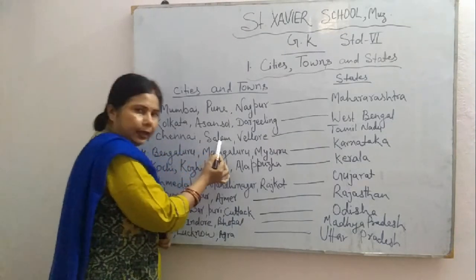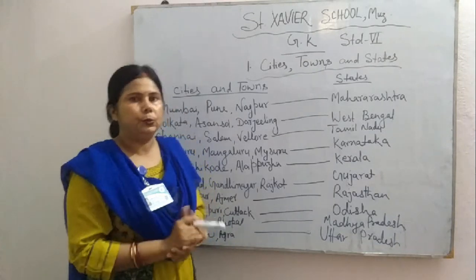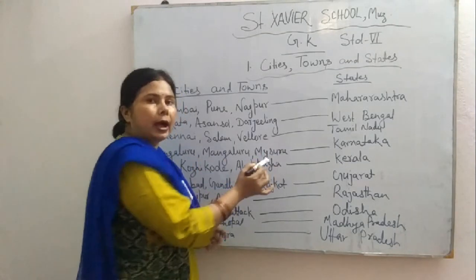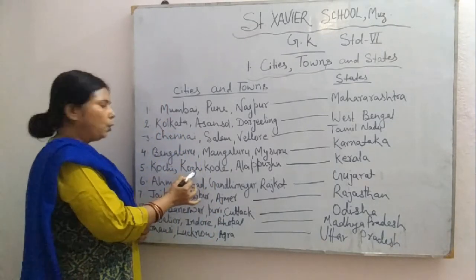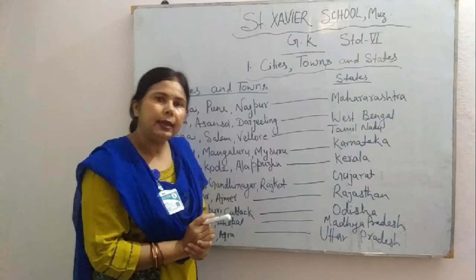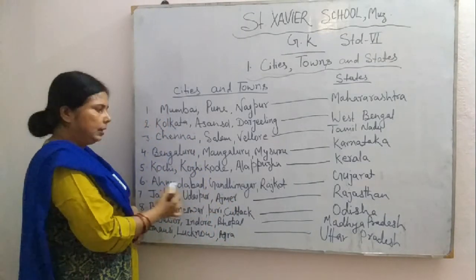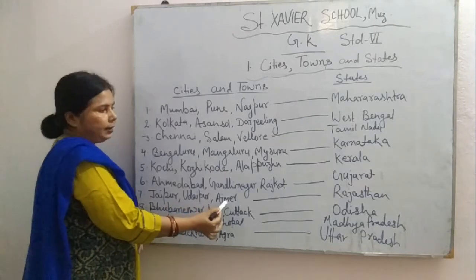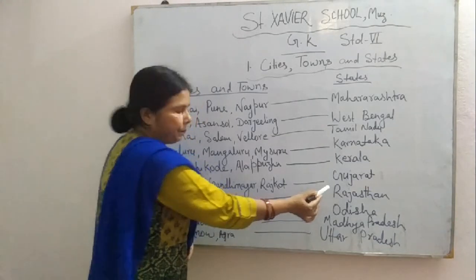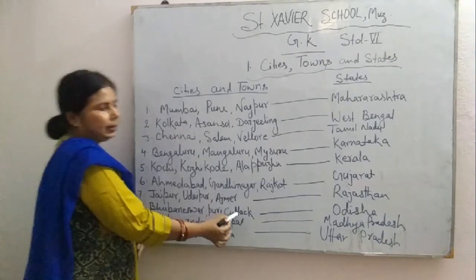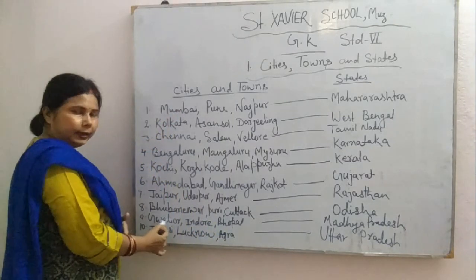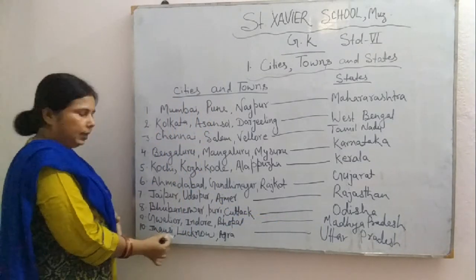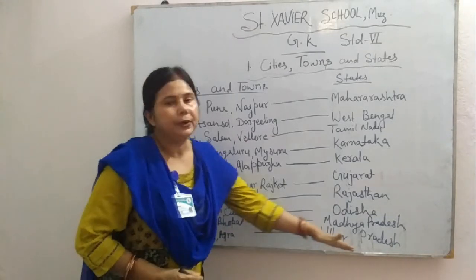Fourth: Bengaluru, Mangaluru and Mysore are in Karnataka. Fifth: Kochi, Kozhikode and Alappuzha are located in Kerala. Next: Ahmedabad, Gandhinagar and Rajkot are in Gujarat. Jaipur, Udaipur and Ajmer are situated in Rajasthan. Next: Bhubaneswar, Puri and Cuttack are in Odisha. Gwalior, Indore and Bhopal are located in Madhya Pradesh. And Jhansi, Lucknow and Agra are situated in Uttar Pradesh.